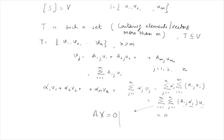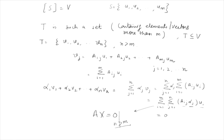Here the number of unknowns is n and the number of equations is m, and since n > m, this system has infinitely many solutions, meaning there exists a non-zero solution. Hence we have shown that {v₁, v₂, ..., vₙ} in T are linearly dependent, confirming that any linearly independent set in V is finite and contains no more than m elements.